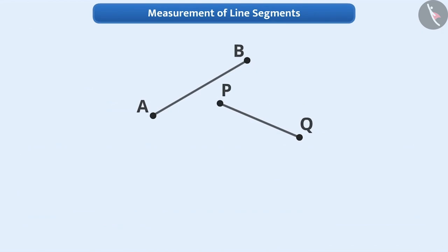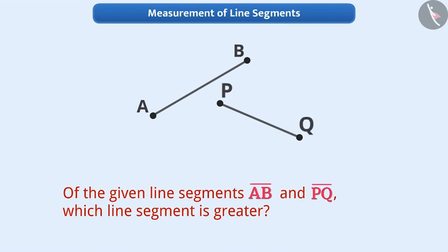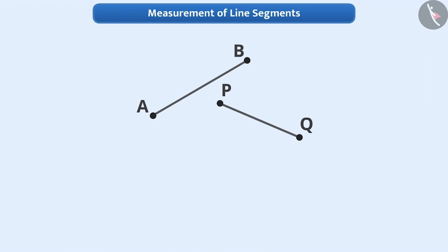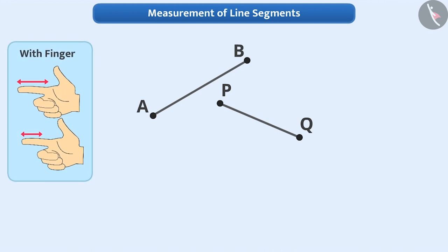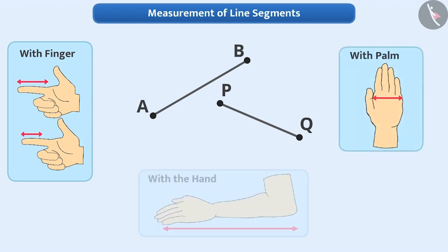Now look here. Of the given line segments AB and PQ, can you tell me which line segment is greater? Here, it is difficult to compare just by seeing because the length of both line segments seems to appear equal to us. We come across many situations where we cannot compare just by looking. In such situations, we can compare with the help of other means, like with the help of a finger, we can identify which line segment is greater. If the length of the line segment is greater than our finger, we can use our palm or hand also for performing comparison.